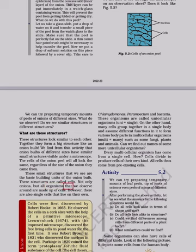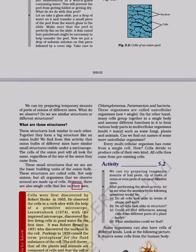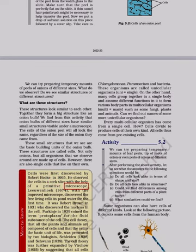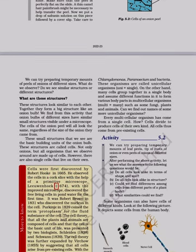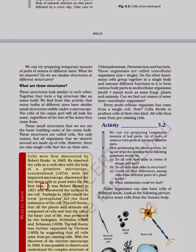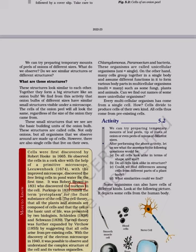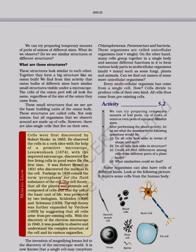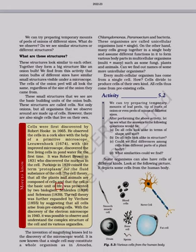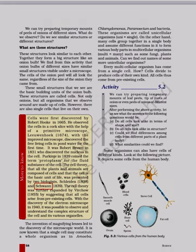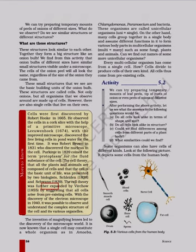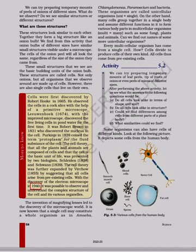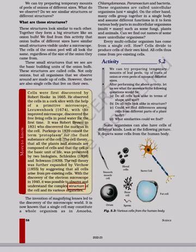Not only onions, but all organisms that we observe around are made up of cells. However, there are also single cells that live on their own. Cells were first discovered by Robert Hooke in 1665. He observed the cells in a cork slice with the help of a primitive microscope. Leeuwenhoek in 1674, with an improved microscope, discovered the free-living cells in pond water for the first time. It was Robert Brown in 1831 who discovered the nucleus in the cell. Purkinje in 1839 coined the term protoplasm for the fluid substance of the cell. The cell theory — that all plants and animals are composed of cells and that the cell is the basic unit of life — was presented by two biologists, Schleiden in 1838 and Schwann in 1839. The cell theory was further expanded by Virchow in 1855 by suggesting that all cells arise from pre-existing cells. With the discovery of the electron microscope in 1940, it was possible to observe and understand the complex structure of the cell and its various organelles.